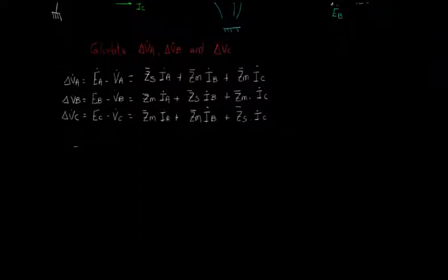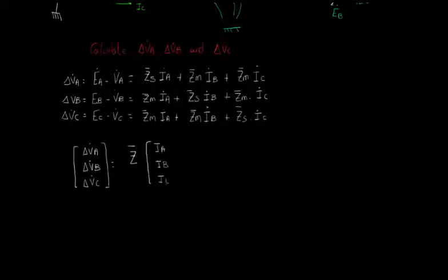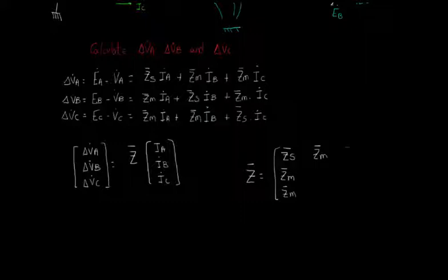In matrix form, these three equations can be written as ΔVA, ΔVB, ΔVC is equal to Z bar times IA, IB, IC, where Z bar is equal to a 3 by 3 matrix ZS, ZM, ZM, ZM, ZS, ZM, ZM, ZM, ZS.